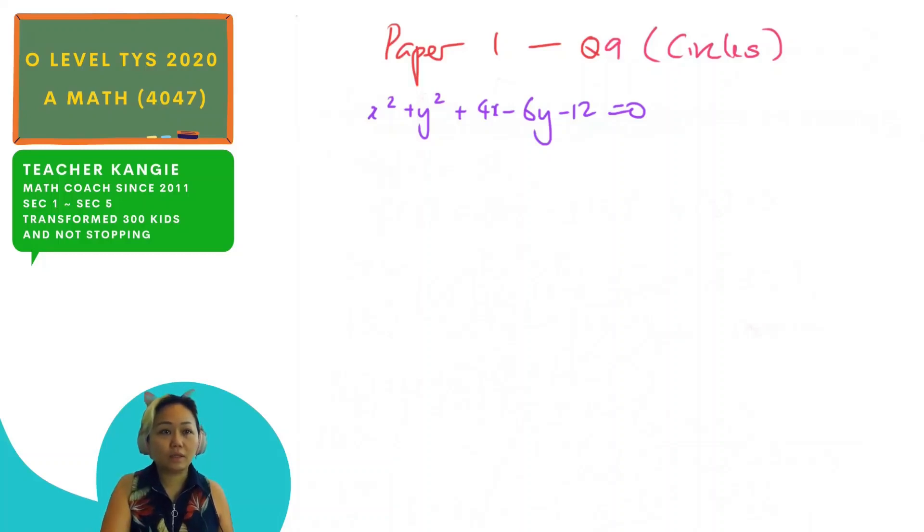Okay, let's do question 9. This is equation of circle. They give us the equation of a circle. They ask us to find the radius and the coordinate of the center.